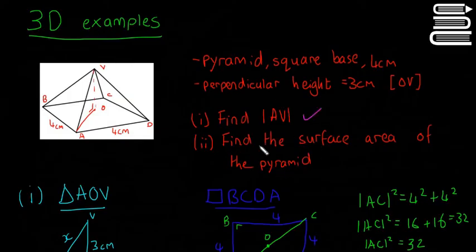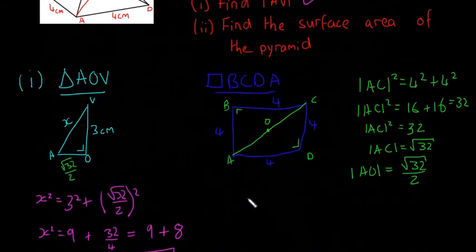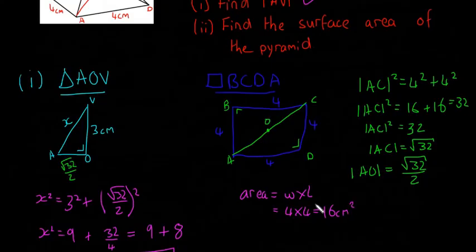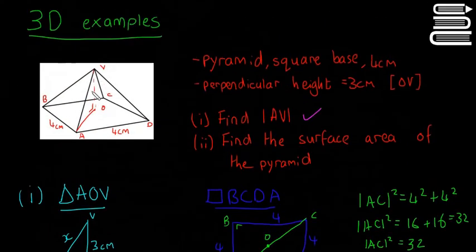Now we need to find the entire surface area of the pyramid. The surface area of the square base is straightforward: area equals width by length, which is 4 by 4 equals 16 centimeters squared. But we also need to find the area of the 4 triangular faces.